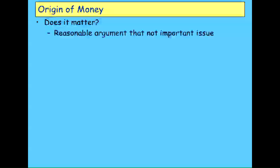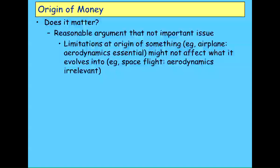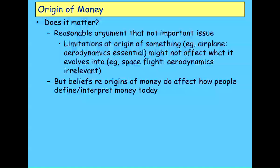On the origin of money, I'd argue it doesn't particularly matter how money evolved in the first place, because just as flight evolved from what dinosaurs did maybe 250 million years ago, that doesn't particularly affect what we do today with a Saturn V rocket. One led to the other, but what the dinosaurs could do doesn't limit what a Saturn V rocket can do. People nonetheless let their beliefs about how money was created affect how they define and interpret money today.